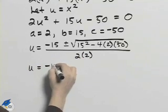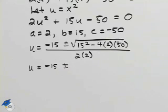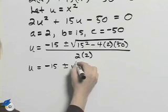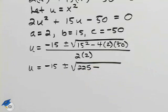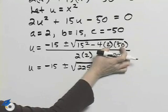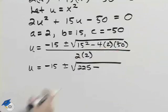In this case, simplifying a bit gives us u equal to negative 15 plus or minus the square root of 225 minus 2 times 50 is 100. 100 times 4 is 400.